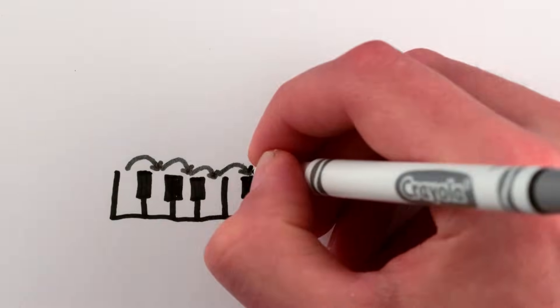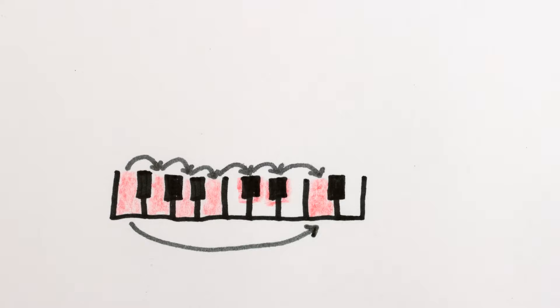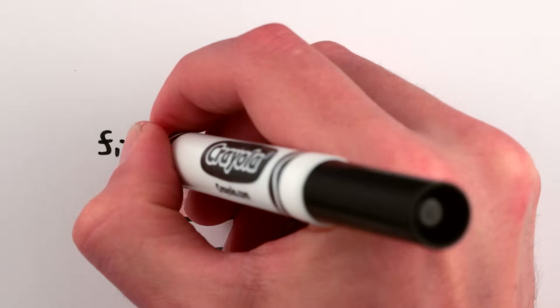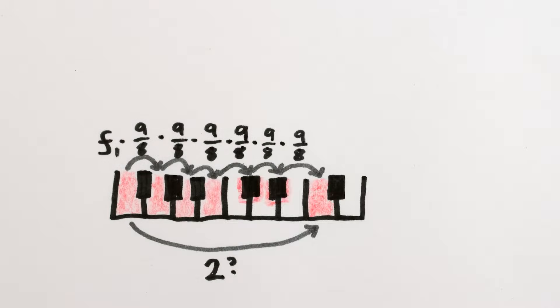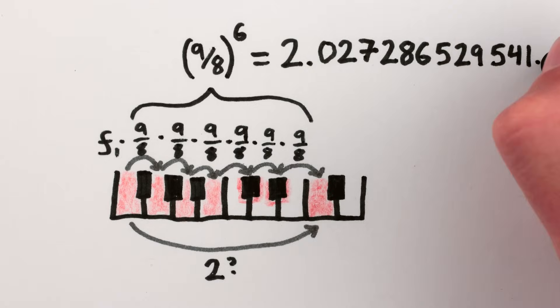But if you do it six times, you'll get to what's supposed to be the original note an octave up, which should have twice the frequency. Except that our harmonic tuning method multiplied the frequency by a factor of nine eighths each time, and nine over eight to the sixth is not two. It's 2.027286529541.